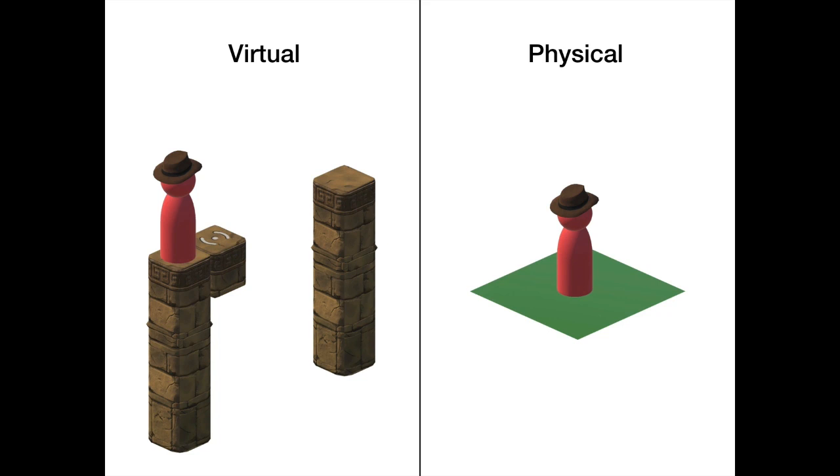Let's start with the basics of keeping the player in the play area. Say you need to go from one tall pillar in the game to another via a moving platform. You step forward onto the platform, the platform moves, and then you step forward onto the next pillar. But now you're outside your physical play area.